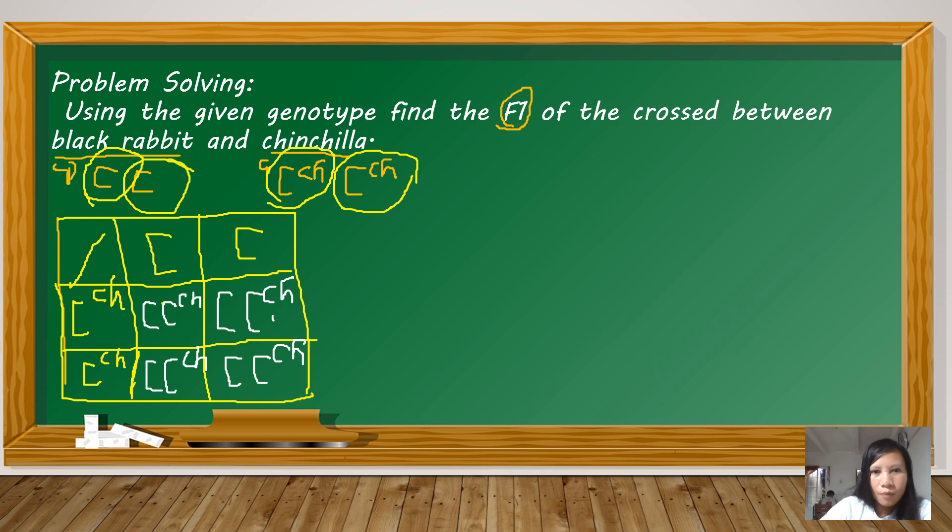Now, let us interpret. What will be the phenotype of the F1 generation? Let's look at what's in those four boxes. Are they the same? They are the same. Copy-paste. C raised to C-h. So, what does this mean? We studied earlier, there's no symbol like this, right?